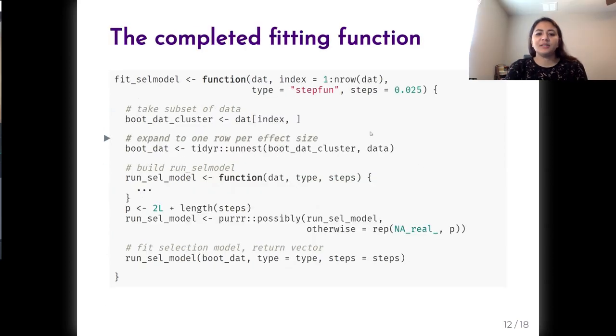Here is the completed fitting function called fit_sel_model. First, we take a subset of the data based on the index argument. This generates a subset of the data based on resampled clusters. We use the unnest function to get the effect size level data for those resampled clusters. We then run the run_sel_model function here. And we include the run_sel_model function inside the big function here to ease parallel processing. The dot dot dot here refers to the contents of the run_sel_model function in the previous slide.